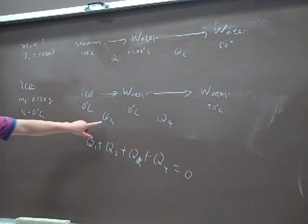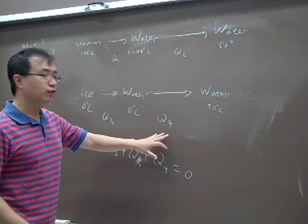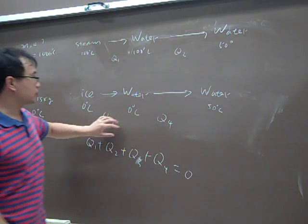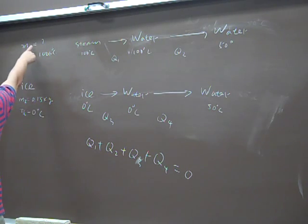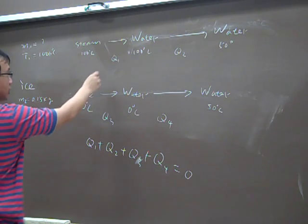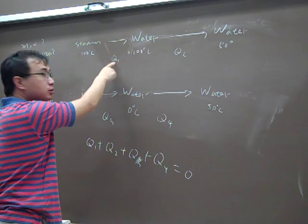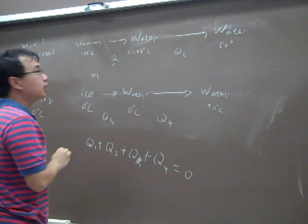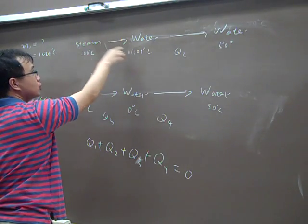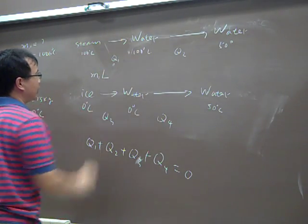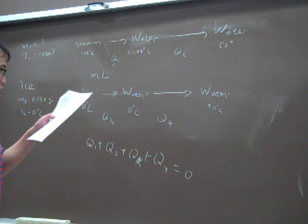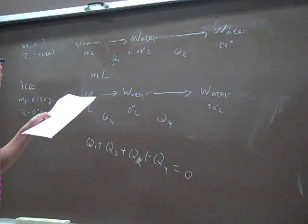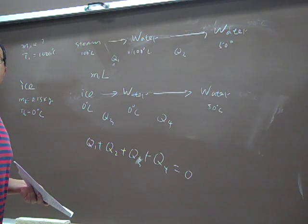Because Q2, Q3, Q4 can be directly calculated. So if we assume the mass is M1, you can see how to calculate Q1. It should be M1. This is the phase transition from steam to water, so multiplied by, which latent heat should be used here? Heat of vaporization, right?